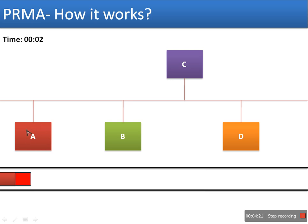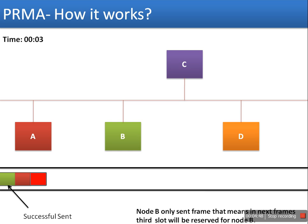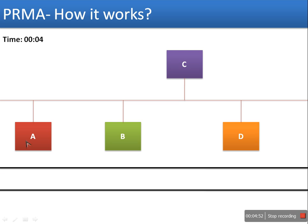Since node A sent data successfully in the second slot, that slot will be reserved for station A in the following frame. In the third slot, station B sends data successfully, so the third slot in following frames will be reserved for B. At time 4, node C sends data successfully in the fourth slot. So in the next frame: second slot is reserved for A, third slot is reserved for B, and fourth slot is reserved for C.